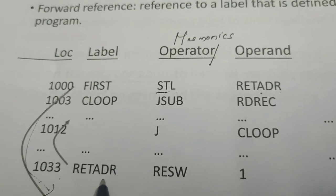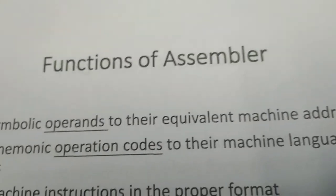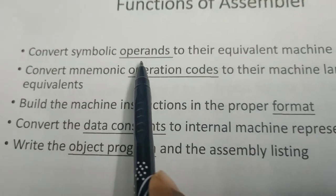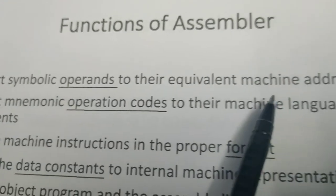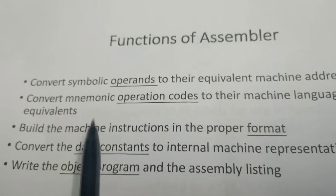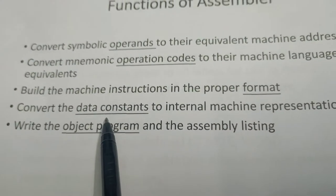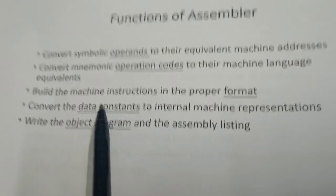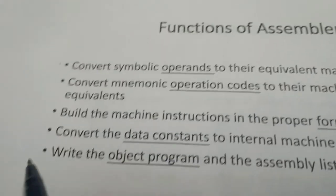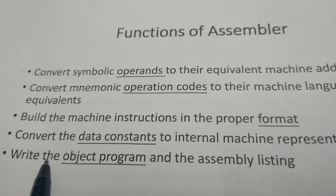Here are the functions of the assembler: it translates symbolic operands to their equivalent machine addresses, converts mnemonic opcodes to their machine language equivalents, converts every instruction into the proper format, represents data constants in their equivalent hexadecimal representation, and finally writes the object code. An example will be solved later to clarify the meaning of each of these functions.